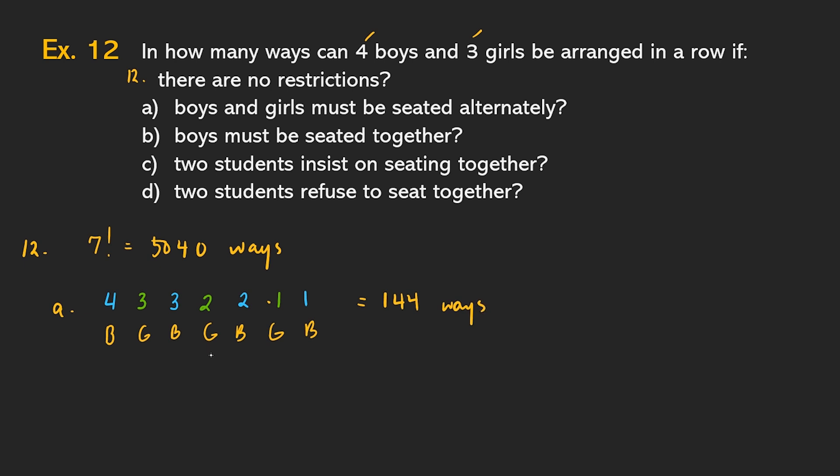144 ways. Now, you can also think of this as, since paupoin mo yung four boys, you can do that in four factorial ways. And then paupoin mo yung mga girls, you can do that in three factorial ways. And four factorial is four times three times two, that's 24. 24 times six, which is 144.